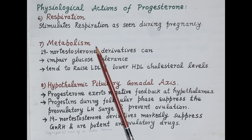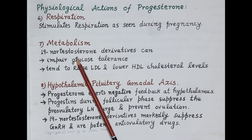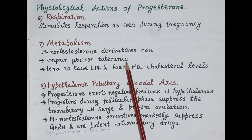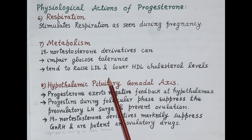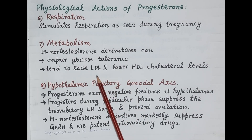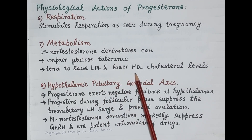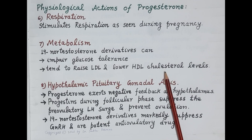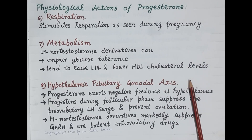Talking about the metabolic effects of progesterone: 19-nortestosterone derivatives of progesterone, called progestins, can impair glucose tolerance. They tend to raise LDL — the bad cholesterol — and lower HDL — the good cholesterol — thereby increasing the risk of cardiovascular diseases.